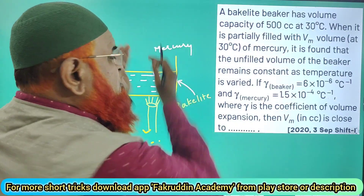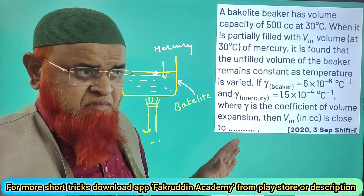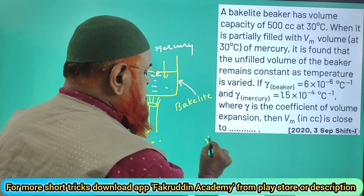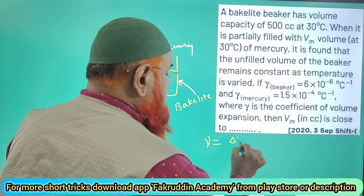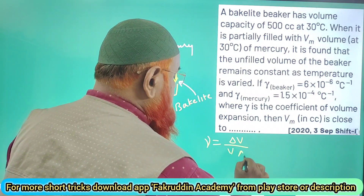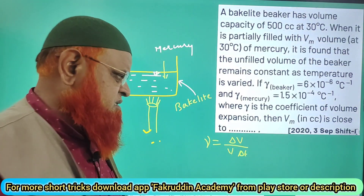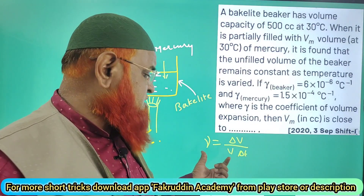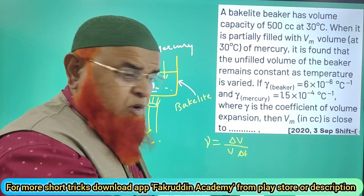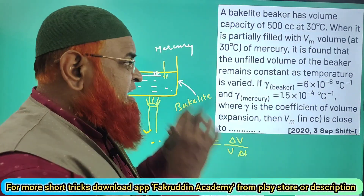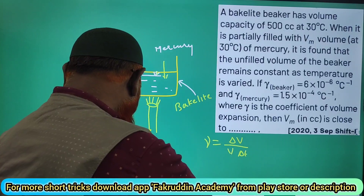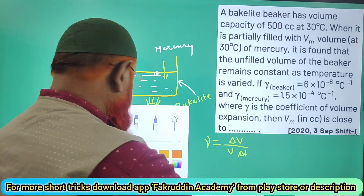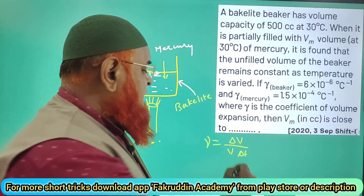There is a formula: γ = ΔV / (V × ΔT). The volume coefficient of expansion equals the increase in volume divided by the actual volume multiplied by the rise in temperature. Since the increase in volume and the rise in temperature are considered constant, we focus on the remaining variables.